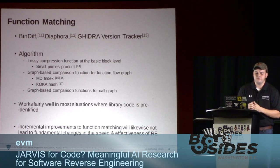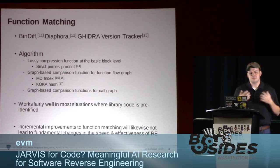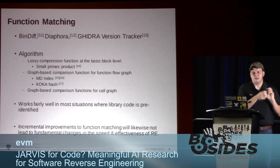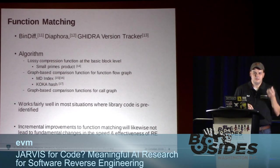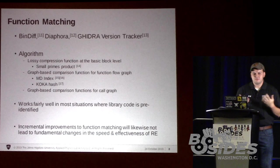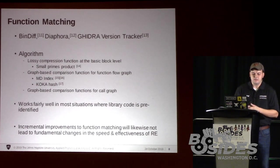The other kind of solved problem is function matching — where you have a function you've either analyzed before or it's a library. Sometimes people take open source libraries like OpenSSL and integrate them into their code. These are tools that help when you know a library is there, or you have code you've already reverse engineered — you can match it up to the new code you're looking at. They work fairly well in most use cases; there are improvements that could be made, but they work pretty well for day-to-day reverse engineering.